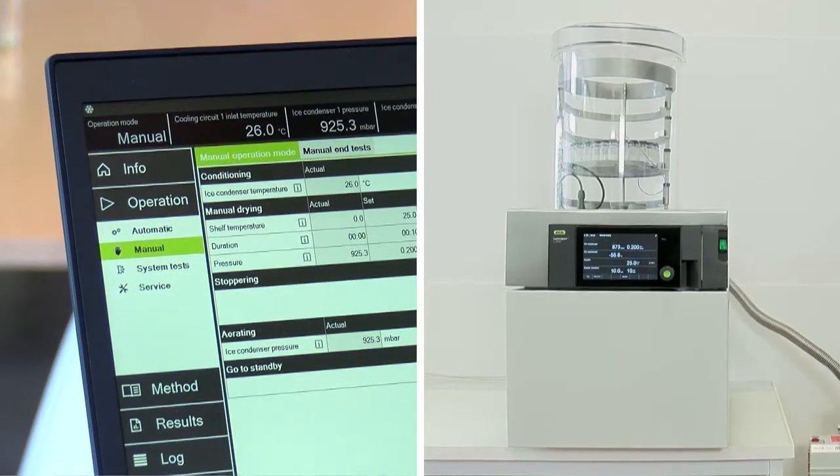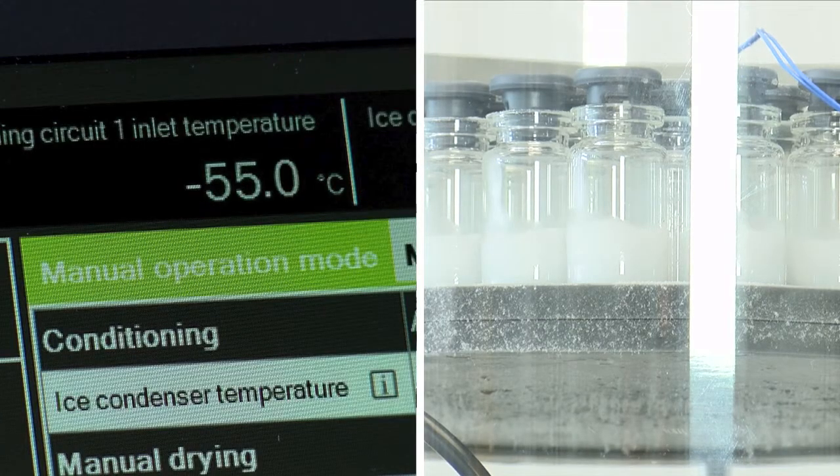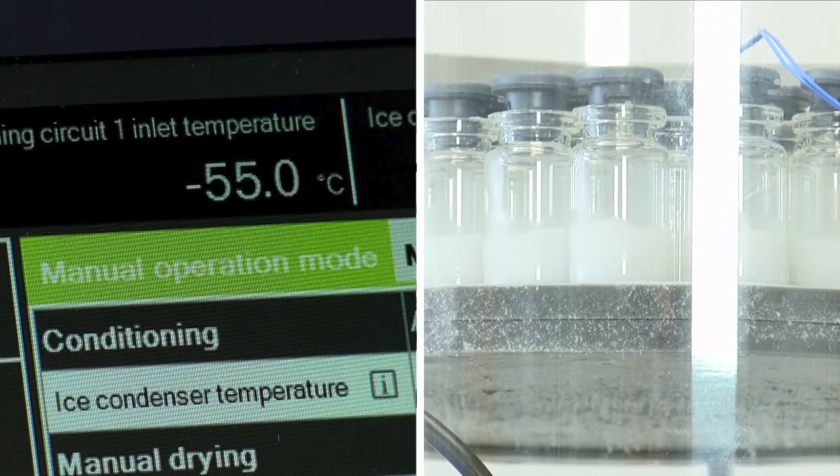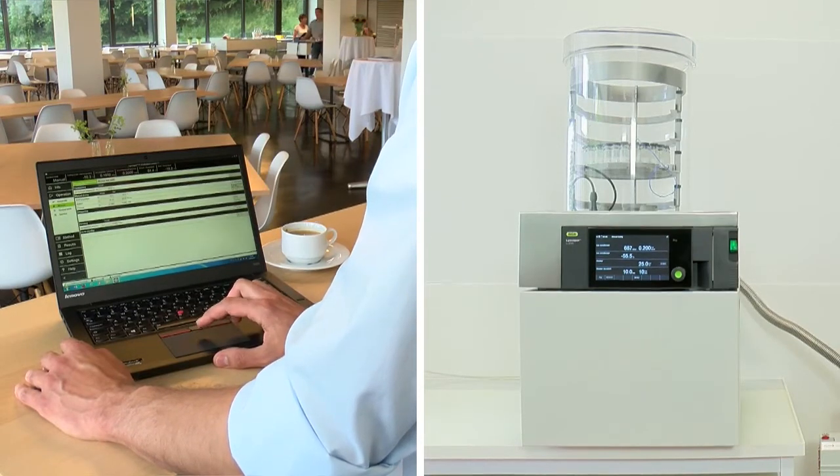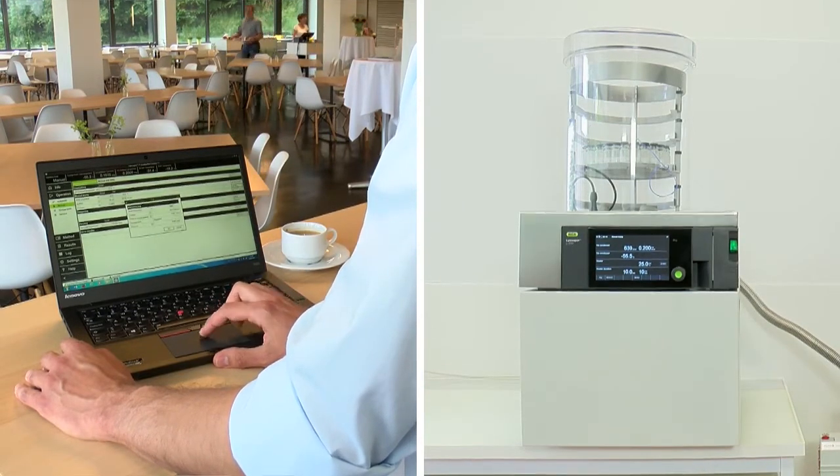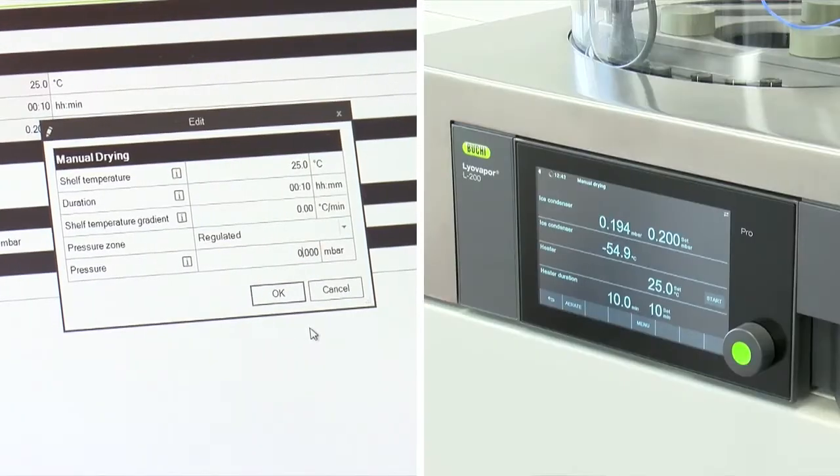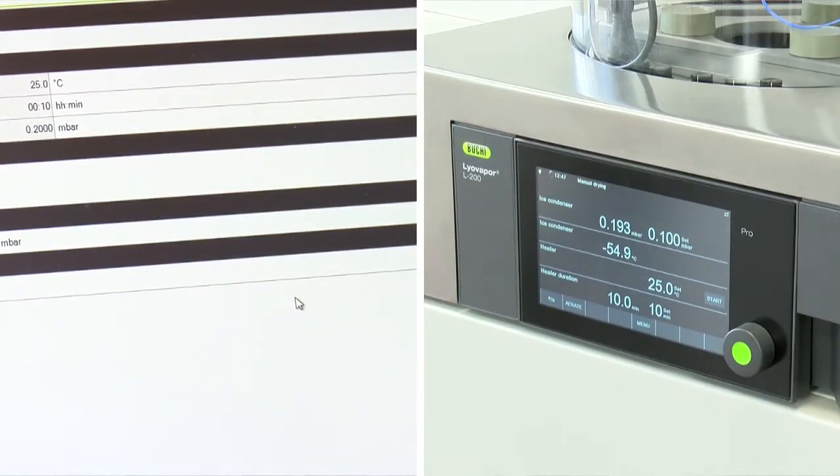Once your sample has been loaded into the freeze dryer and you have started the freeze dryer run, it's easy to closely monitor the process conditions with the software and, if necessary, you can change the settings of your cycle, for example, pressure or temperature with the software during the run. So this gives you infinite control.